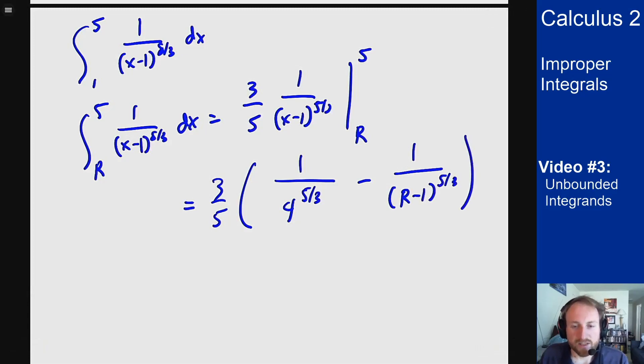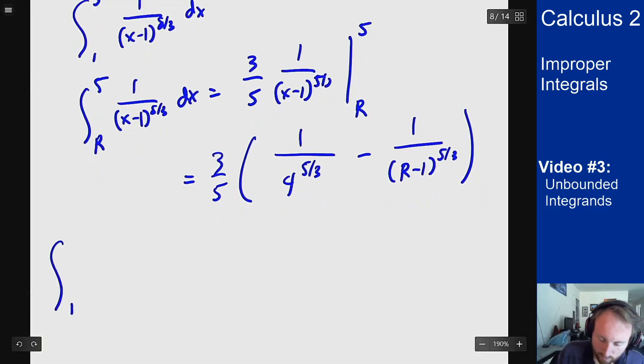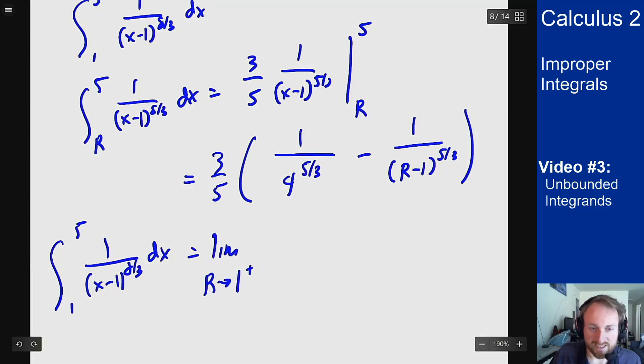But now what happens when I send r to 1? I see I have a problem with this one. So the integral from 1 to 5 of 1/(x-1)^(8/3) dx equals the limit as r goes to 1 from the right of this expression again: 3/5 · 1/4^(5/3) minus 1/(r-1)^(5/3).